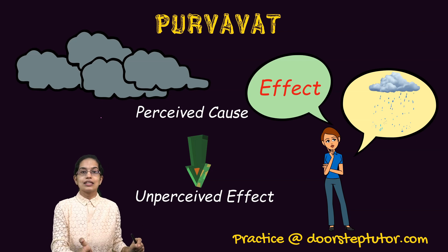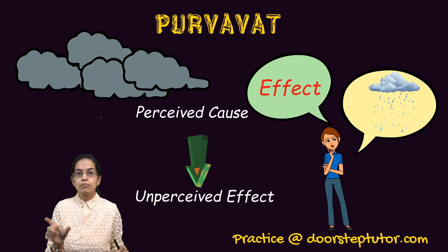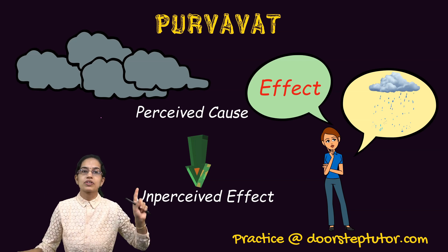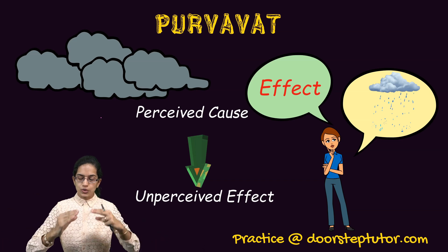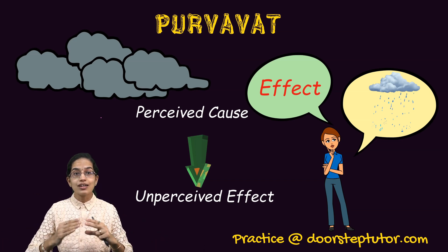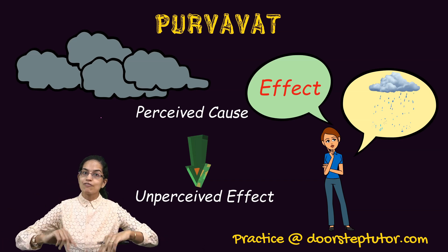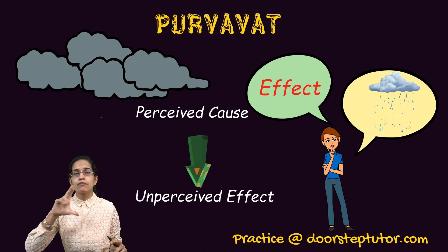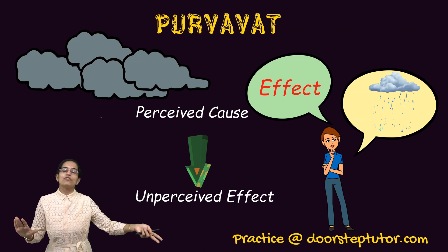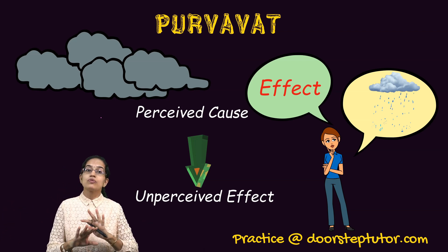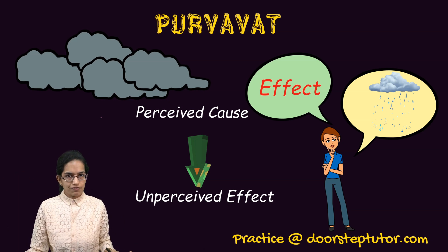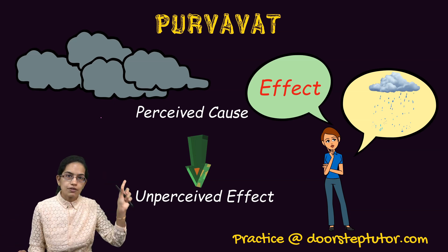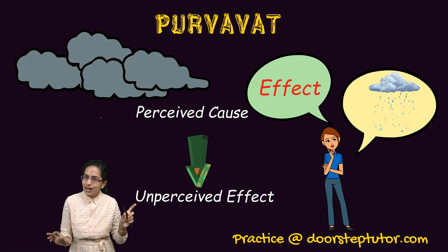This is the most important section where most students get confused between Purvavat and Sesavat. Most exam questions will ask you to identify the type from an example. If you are very clear with the concept, any example becomes easy to solve. In Purvavat, there is a perceived cause — the cause has been visualized, observed, and known — but the effect is unperceived.